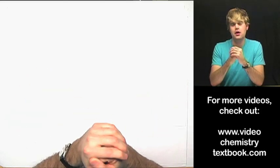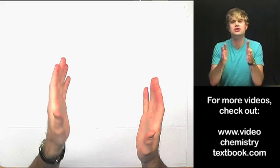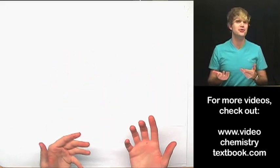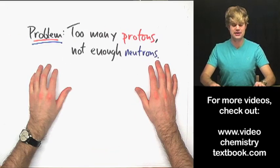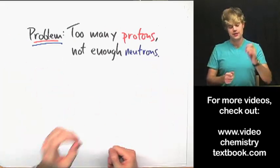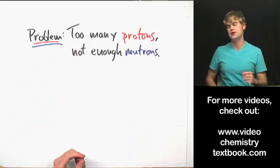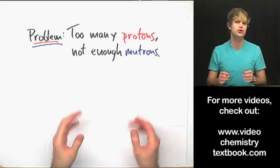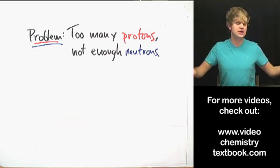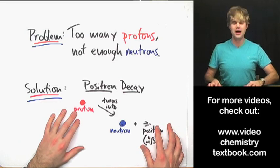Let's talk positron decay. All atoms decay because they have some kind of a problem they want to fix. The atoms that do positron decay are no different — they have too many protons and not enough neutrons in their nucleus. So what do they do to fix it? The solution is positron decay.